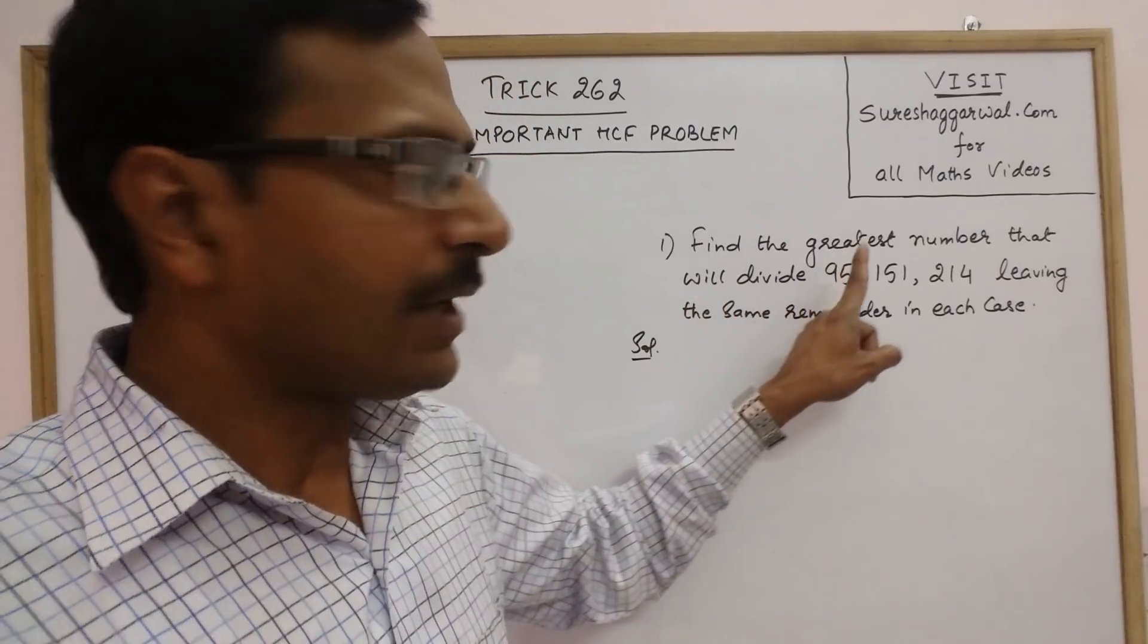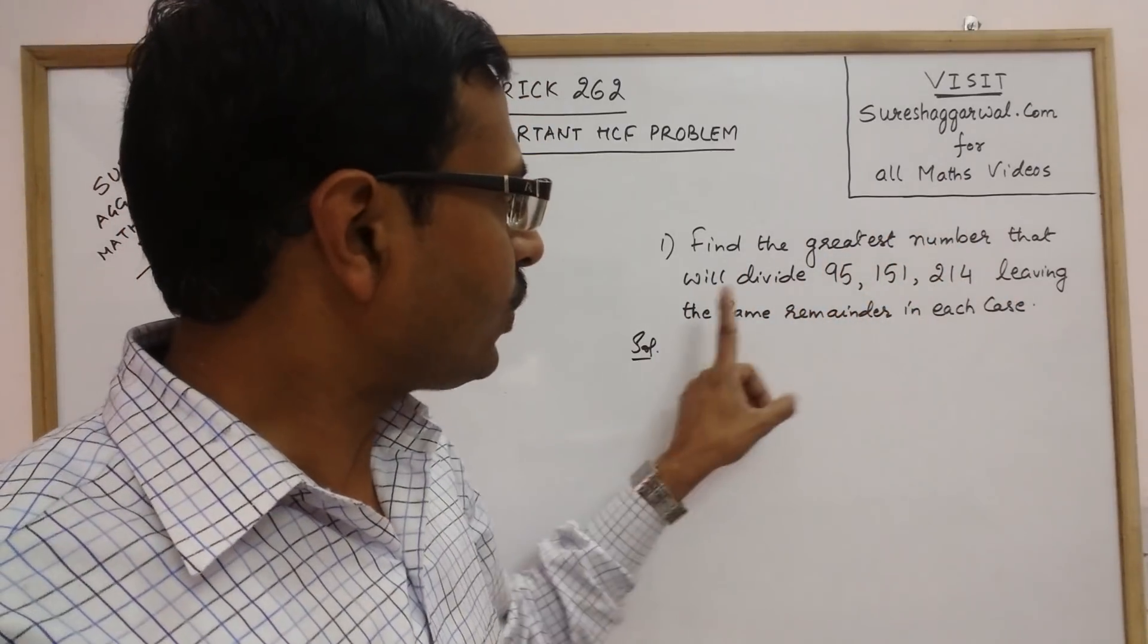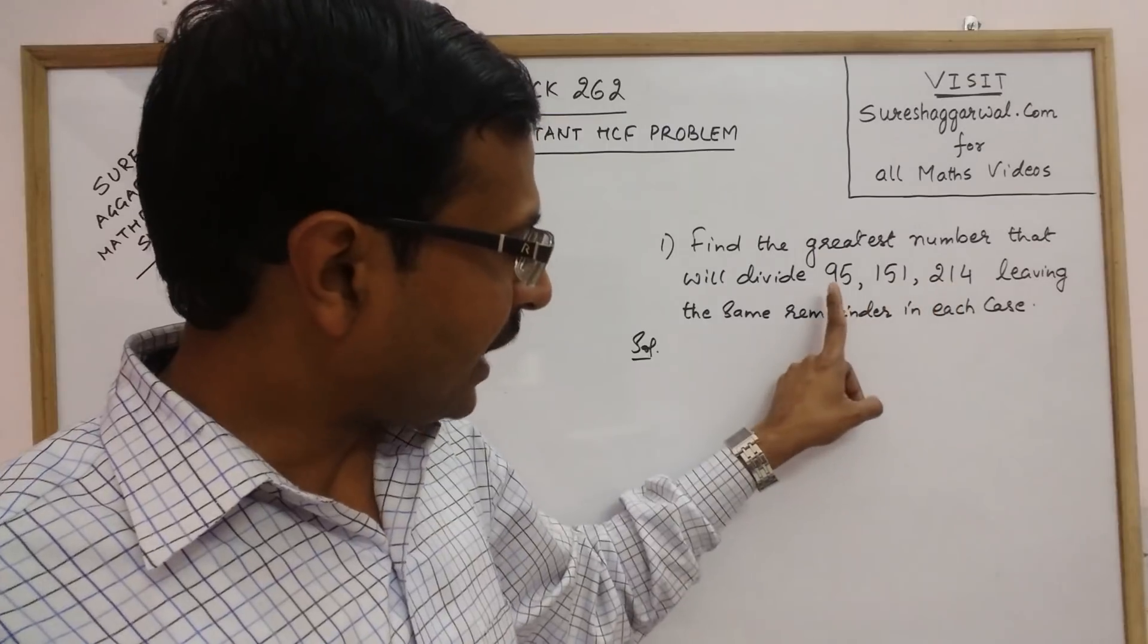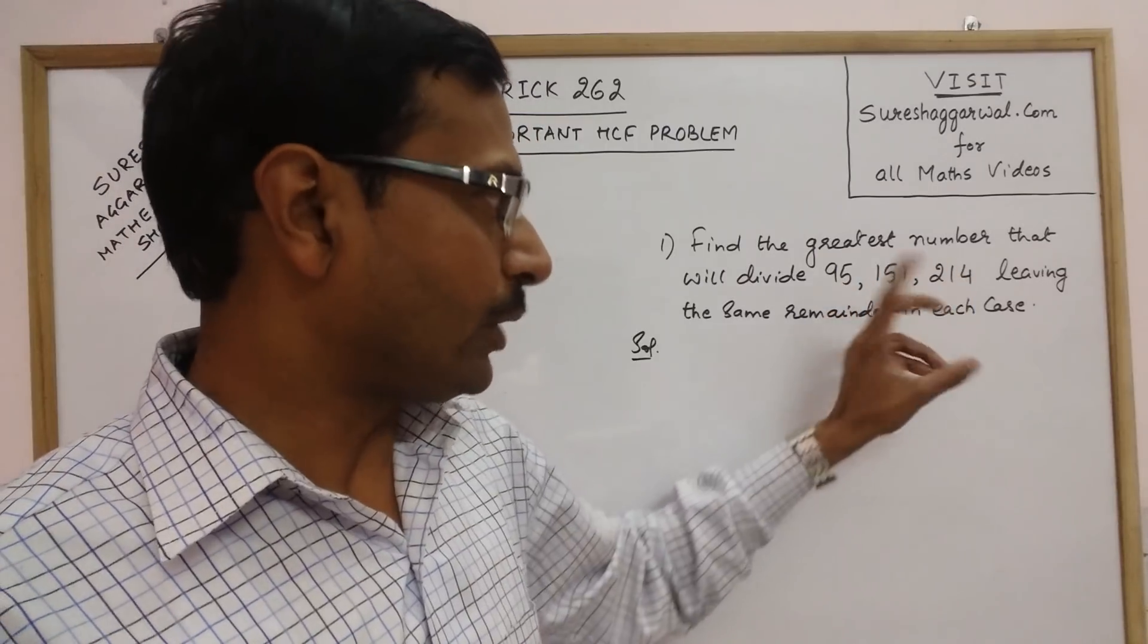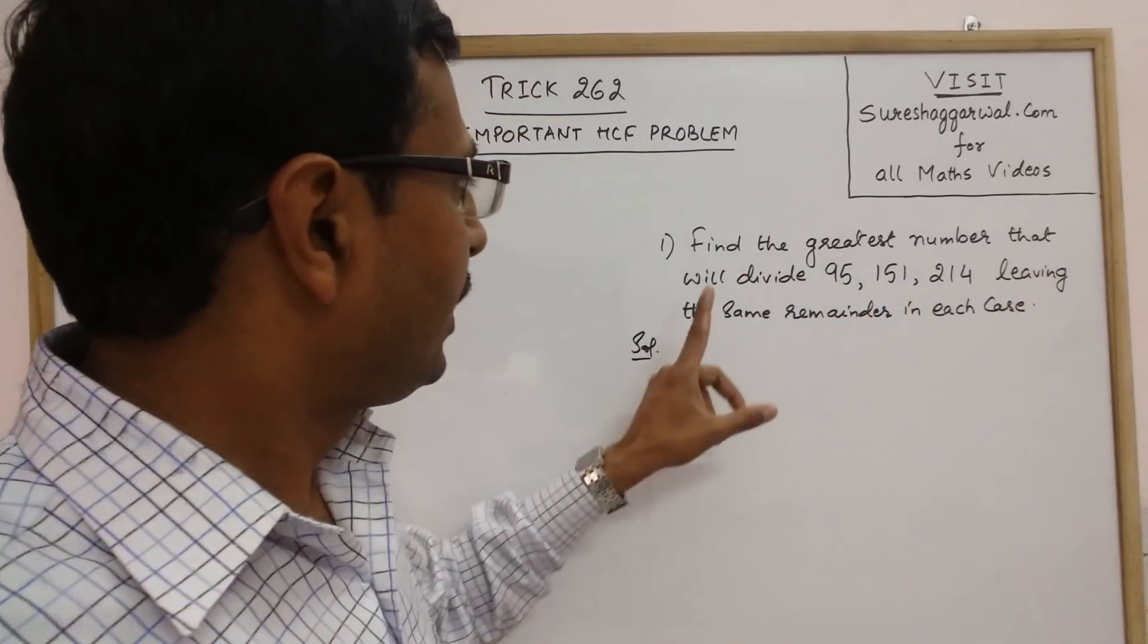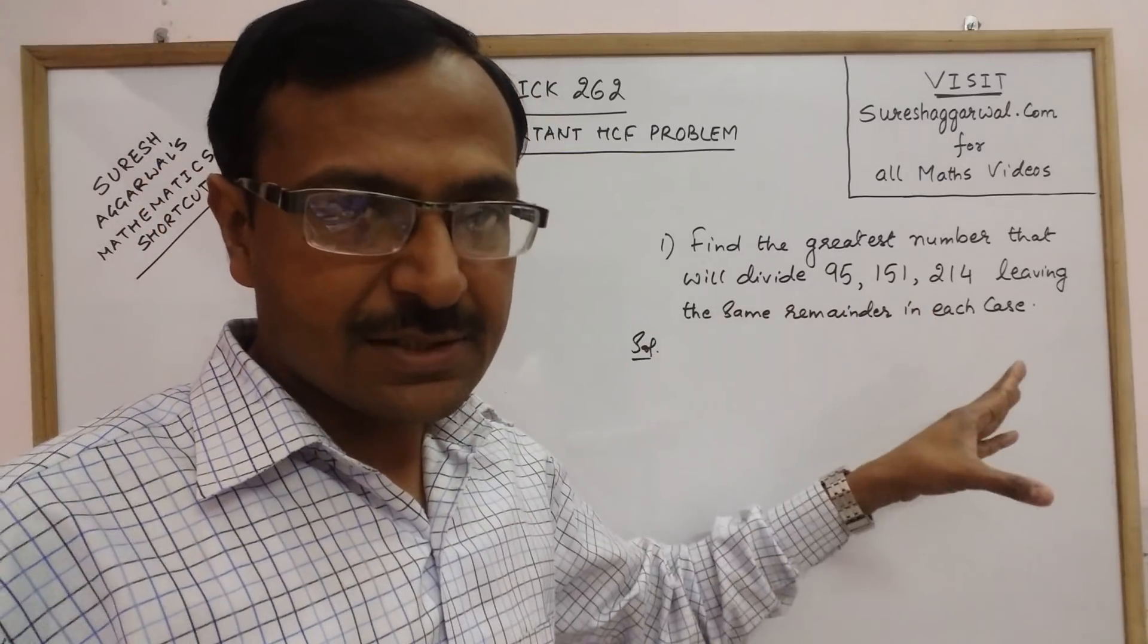Now, the problem is to find the greatest number that will divide the numbers 95, 151, 214. There are three given numbers, leaving the same remainder in each case.